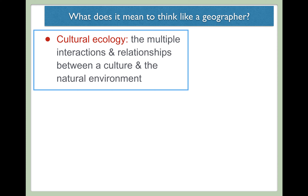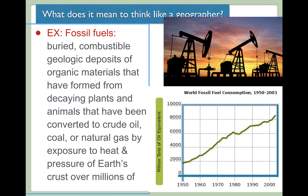There's a specific area of geography called cultural ecology — a term that refers to the multiple interactions and relationships between culture and the natural environment. This is almost synonymous with human-environment interactions. We can consider cultural ecology to be an area of study, with human-environment interactions being a more generalized term to refer to these interactions.